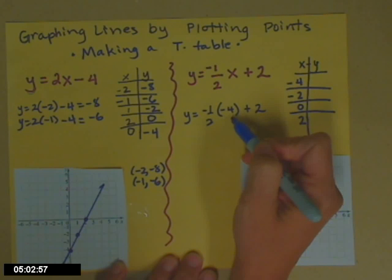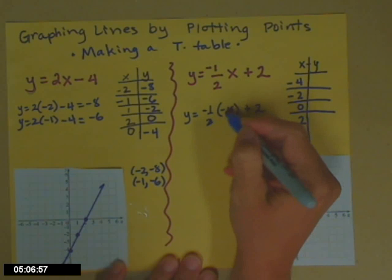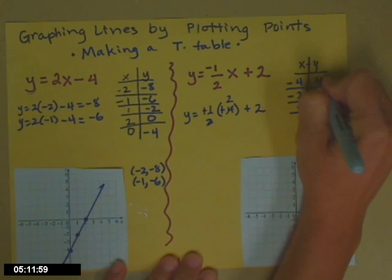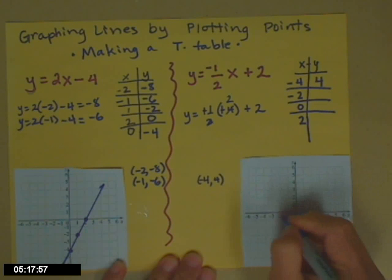So negative 1 half times negative 4. So the two negatives multiply to give you a positive. The 2 and the 4 go in, right? These guys canceled. 2 plus 2 is 4. So that's the ordered pair. Negative 4, 4. So find that one on your graph. Looks like it's right there on mine.